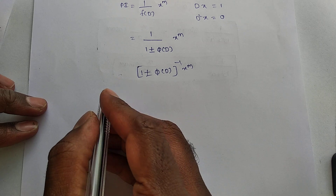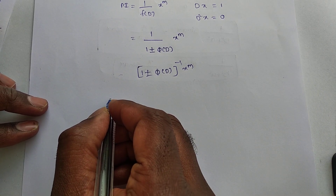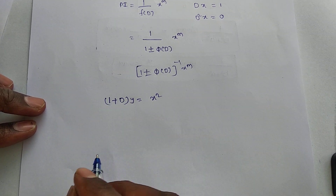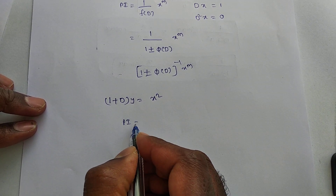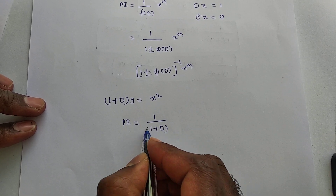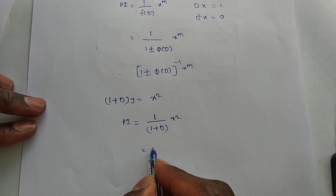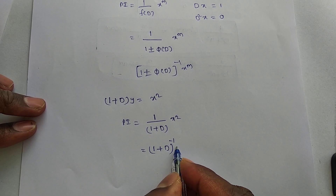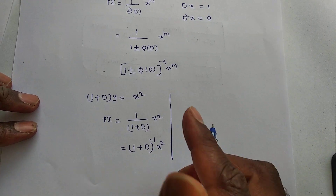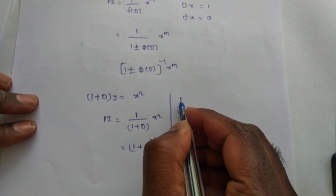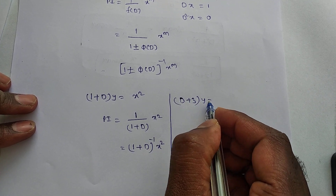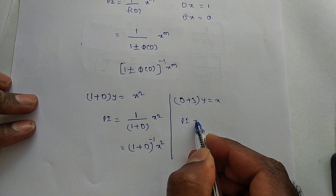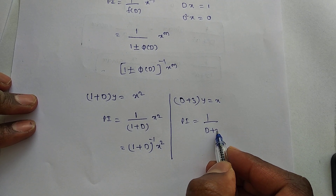For example, if f(D)·y = (1+D)·y = x², then PI = 1/(1+D) · x², which is already in (1+D)^(-1) form. For a second case, (D+3)·y = x, PI = 1/(D+3) · x. Here the lowest degree term in f(D) is 3, so take 3 as a common factor to get (1/3)·[1 + D/3]^(-1) · x.